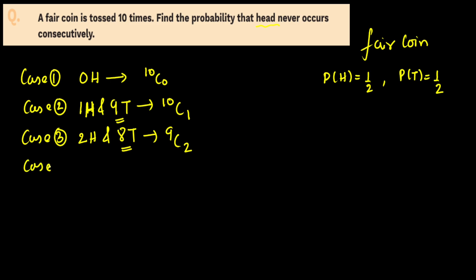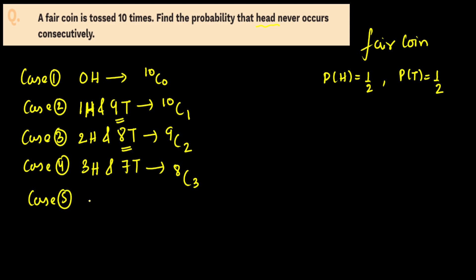Case 4: 3 heads and 7 tails. Using the gap method, 7 tails generate 8 gaps. Out of 8 gaps I select 3, giving 8C3. Case 5: 4 heads and 6 tails. 6 tails generate 7 gaps, and out of 7 gaps I select 4, giving 7C4.